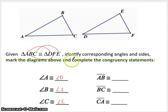Likewise, segment AB connects the first letter and the second letter, so that has to be congruent to segment DF. And segment BC is congruent to segment FE, that's the second letter, third letter.